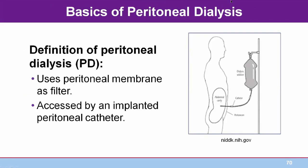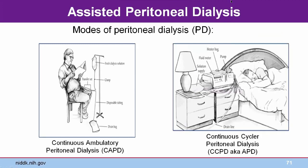Peritoneal dialysis uses the peritoneal membrane as its filter for fluid and waste products, accessed by an implanted peritoneal catheter. PD can be continuous with manual exchanges both day and night — continuous ambulatory peritoneal dialysis (CAPD) — or more likely done using a machine to cycle approximately four exchanges throughout the night while the patient sleeps, with one manual exchange during the day — continuous cycler peritoneal dialysis (CCPD), also known as automated PD. Hospitalized patients on PD will have their prescription adjusted as necessary. More information on PD can be found in Module 6 of this series.